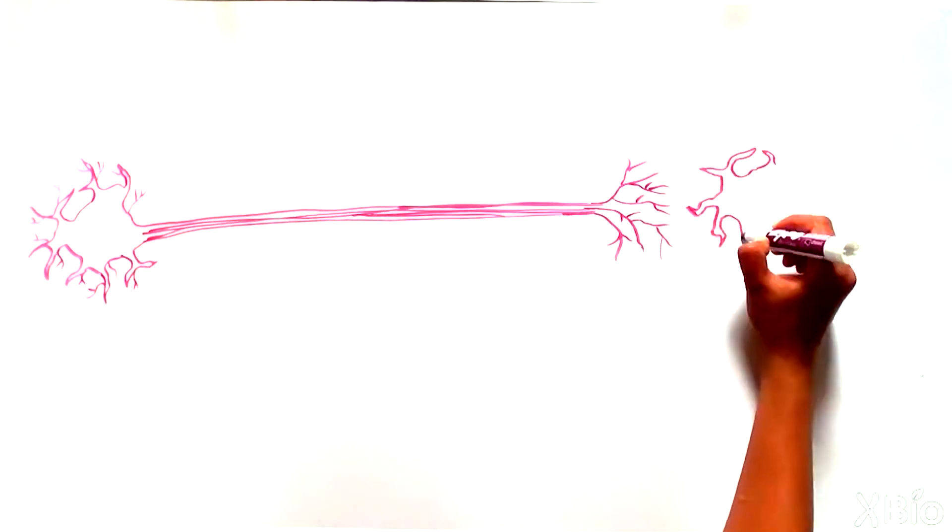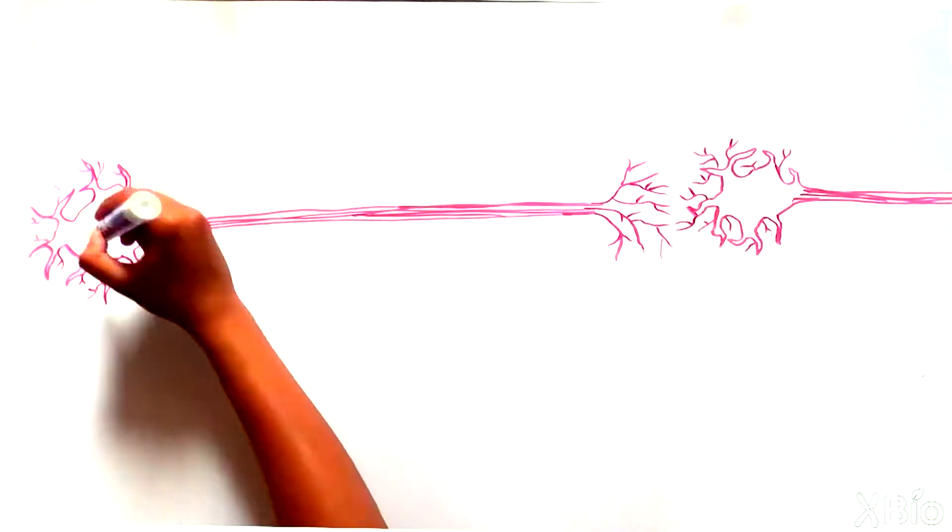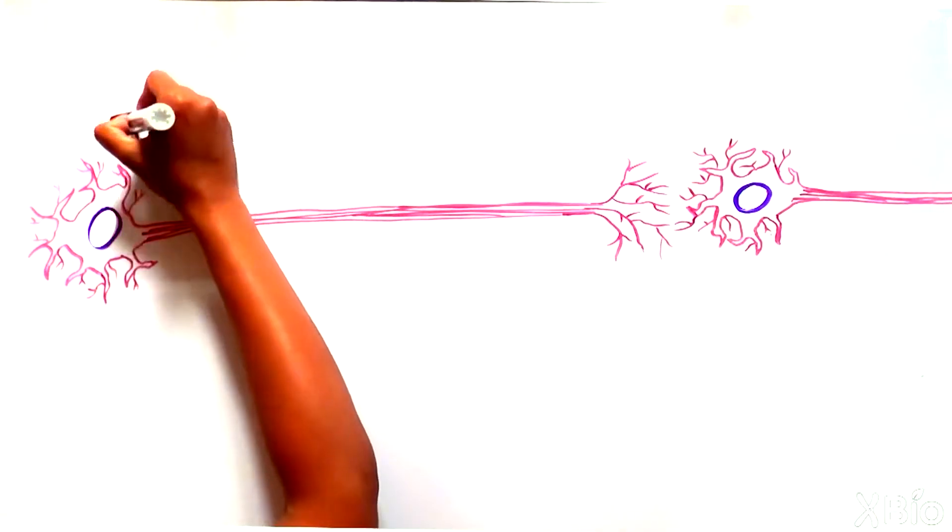Lastly, the axon is a longer, less-branched projection from the cell body, from which the neuron sends outgoing signals to other cells.